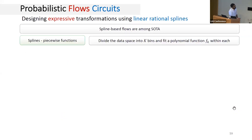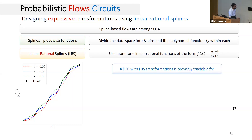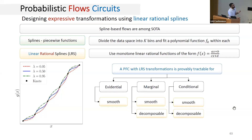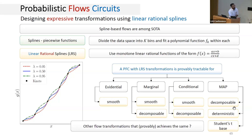With these design principles in mind, we propose using spline-based transformations. Spline-based normalizing flows are state-of-the-art in the flow literature. Splines are piecewise functions that divide the data space into bins and fit a polynomial within each bin. We propose invertible linear rational spline transformations of the form f(x) = (ax + b) / (cx + d). We prove that a probabilistic flow circuit using linear rational spline transformations is tractable for evidential inference if the PC is smooth; marginal and conditional inference if smooth and decomposable; and MAP inference if decomposable, deterministic, and using a Student's t distribution as the base.